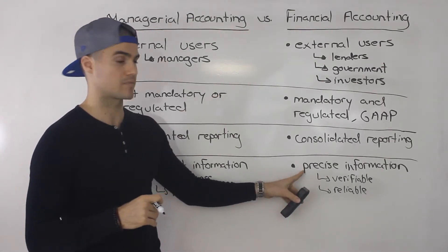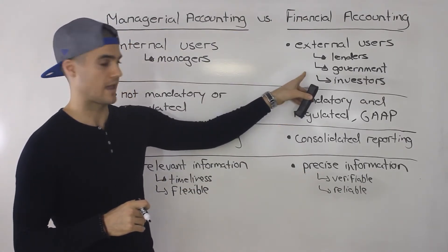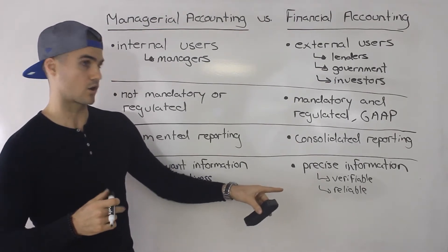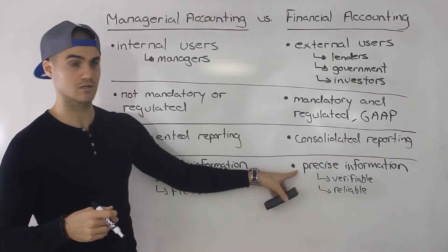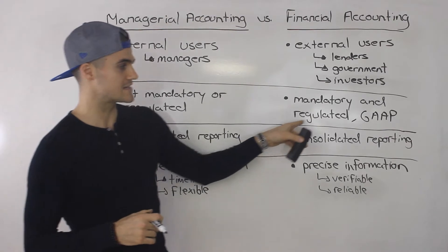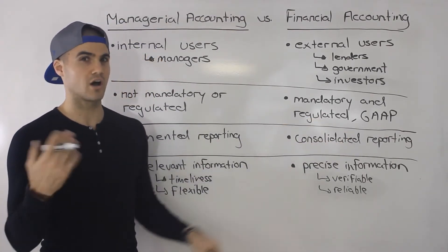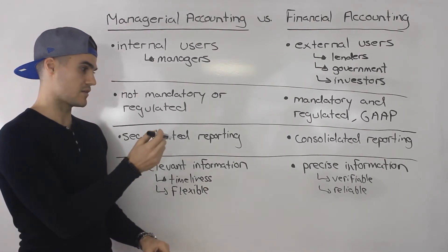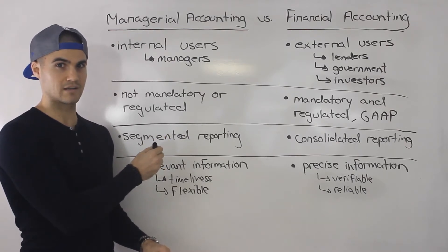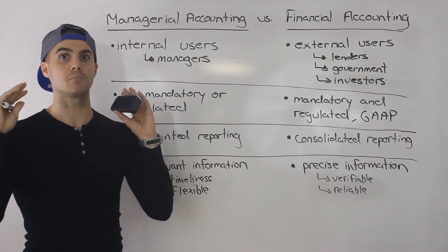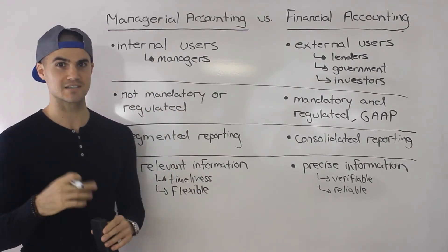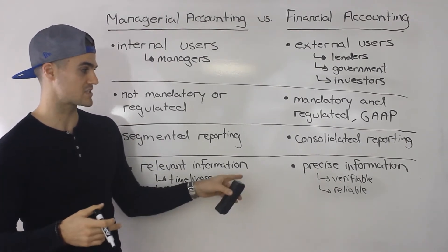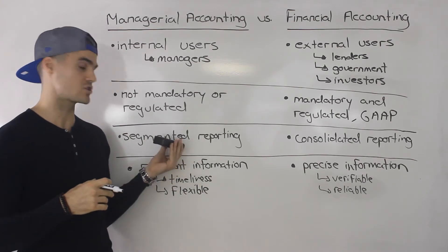Versus financial accounting, it has to be precise because external users are going to be using it. If it's not precise, there could be lawsuits filed — there are cases where companies are cooking their books. And because the reporting is consolidated, the precise information doesn't cost as much to get. If you're looking at the printer paper that a company as a whole is using, it's not going to be as tough to monitor versus tracking it for each individual manager. So there are always trade-offs between precision and the cost of implementing a system, especially with segmented reporting.